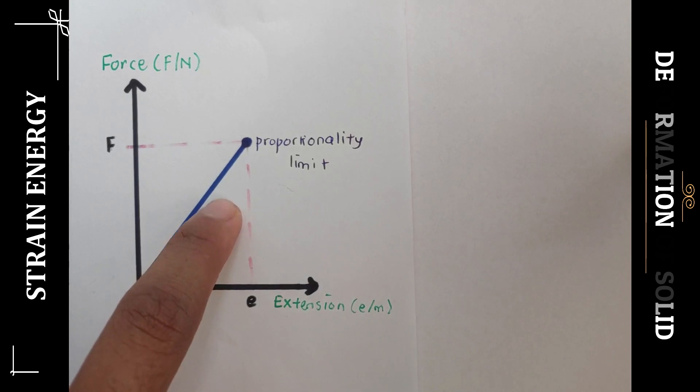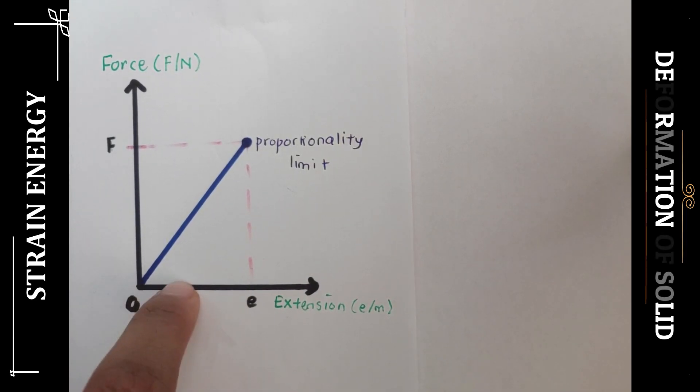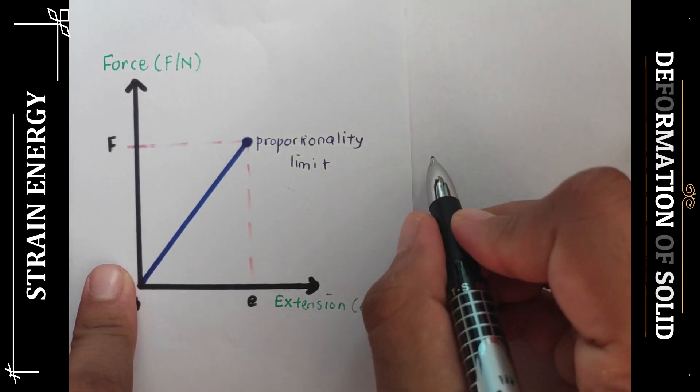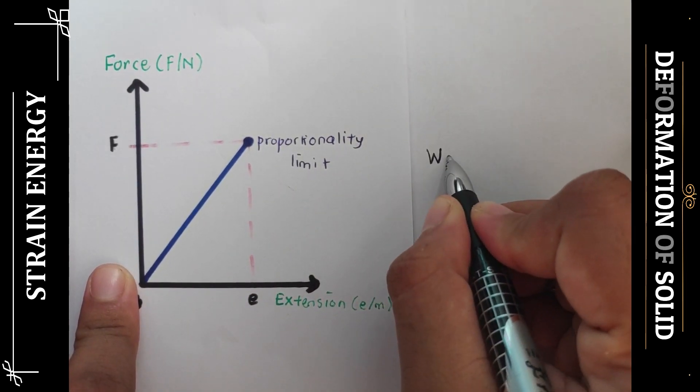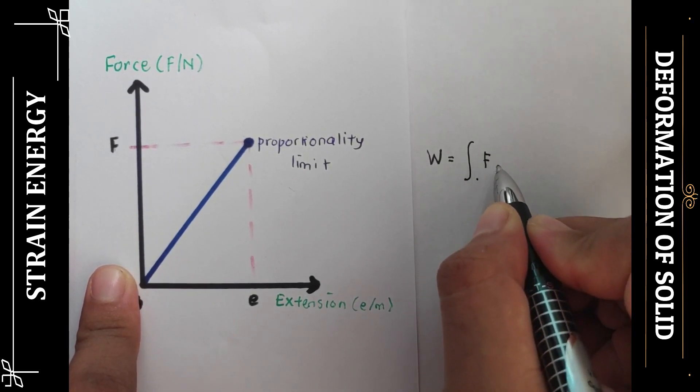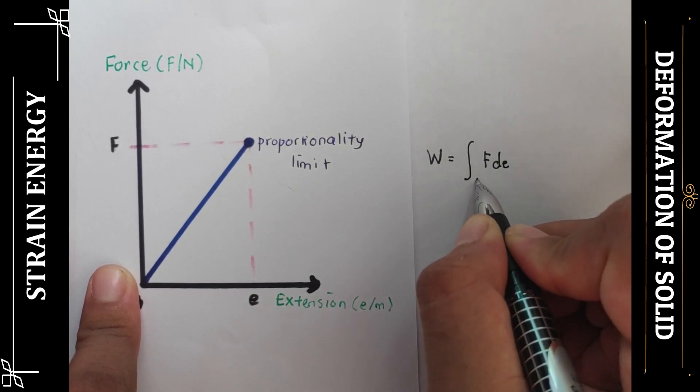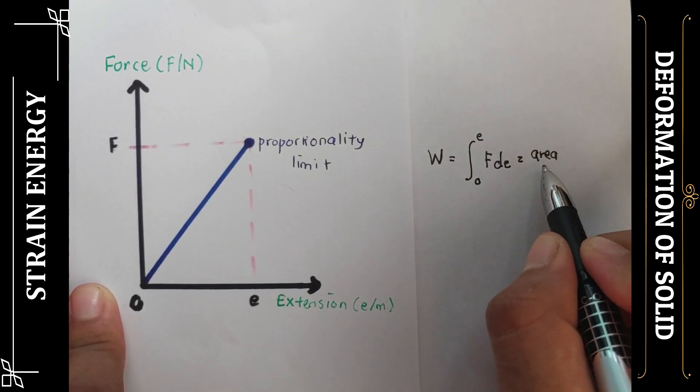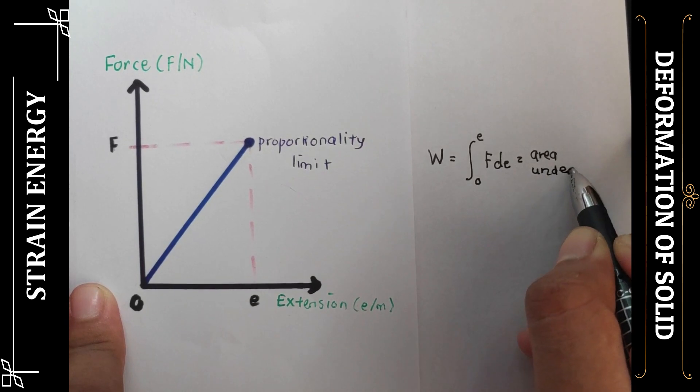The total work done W in stretching a wire from O to A with extension E is given by W equals the integral of F dE from point 0 to point E, which equals the area under the graph.